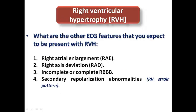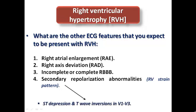Other ECG features expected with RVH include right atrial enlargement (P-pulmonale), with P-wave amplitude more than 2.5 mm in limb leads and more than 1.5 mm in chest leads, right axis deviation, incomplete or complete right bundle branch block in most cases, and secondary repolarization abnormalities — the RVH strain pattern — in the form of ST depression and T-wave inversion in V1 to V3.